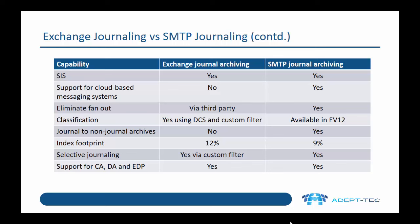Classification is available for exchange journal archiving using data classification services and a custom filter. For SMTP journal archiving it is available in enterprise vault 12. For exchange journal archiving you can only archive to a journal archive, whereas for SMTP journal archiving you have great flexibility and you can archive to any archive type.